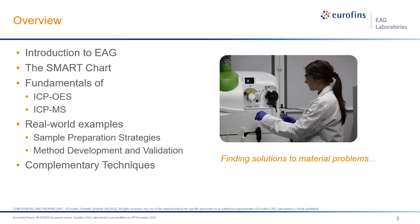We will start today's webinar with a brief introduction to EAG, followed by our resource tool, the Smart Chart. We will then transition to some basics of inductively coupled optical emission spectroscopy and inductively coupled plasma mass spectrometry. After discussing the process of chemical analysis, we will explore the principles of operation of each technique. We will share our experiences in analyzing real-world samples, discuss complementary techniques, and discuss some strengths and limitations of ICP-OES and ICP-MS.